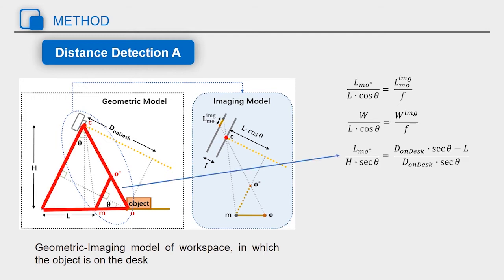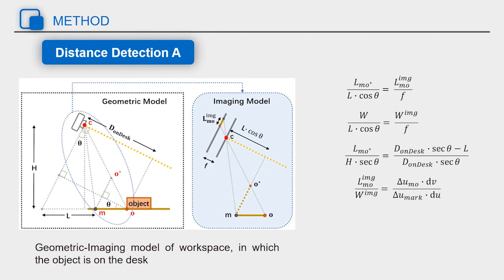For marker, the optical imaging equation can also be established. Then, we can also set up a geometric equation. And the actual length of the light segment in the imaging can be correlated with the pixel length. By correlating these equations, we can get the equation for the distance of the object on the desk.